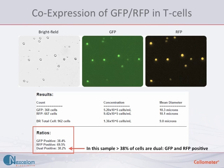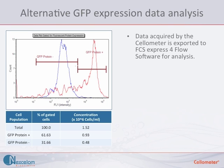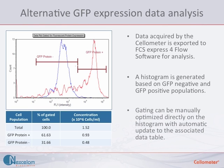Alternatively, we can also measure GFP expression by looking at the total fluorescence intensity of a sample and export it to software that is typically used for flow cytometry. The data from the Cellometer images are exported to FCS Express software and a histogram is generated. The histogram displays the GFP negative as well as the GFP positive populations. Gating can be manually adjusted and the corresponding data is automatically updated.